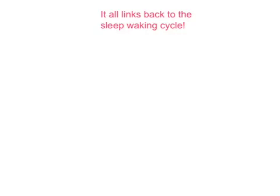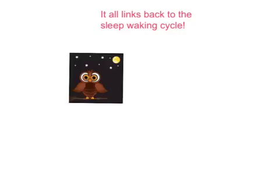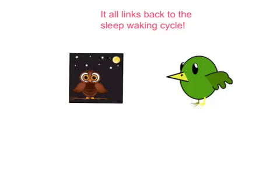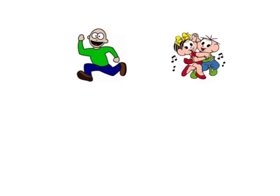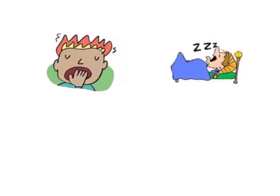It all links back to the sleep-waking cycle. Nocturnal animals are active and alert at night but need to sleep and stay safe during the day. Diurnal animals reverse this pattern, being active during the daytime and sleeping at night. Either way, it makes sense for the body's physiological processes to be in tune with the sleep-waking cycle so that energy is provided when needed. For example, rising body temperature during the daytime in diurnal animals like humans allows for increased metabolic activity and energy expenditure. As night approaches, body temperature falls, allowing for decreased energy expenditure.